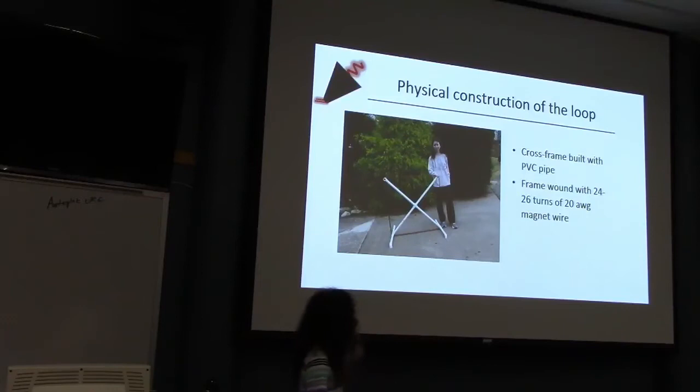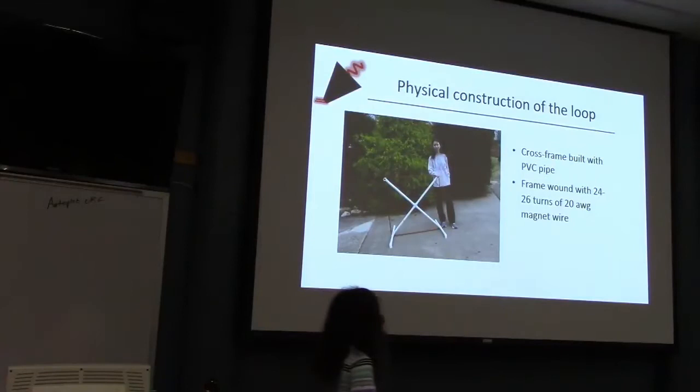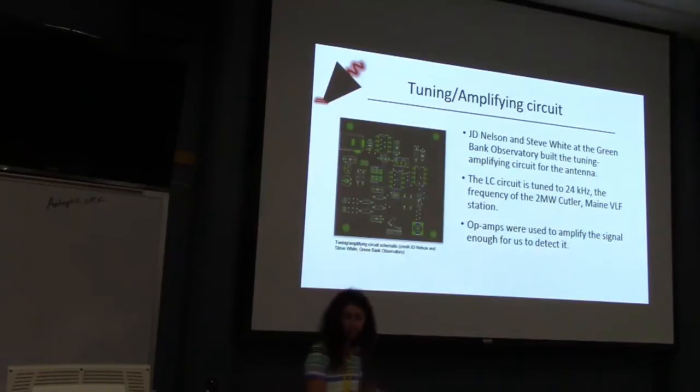GNU Radio performs digital signal processing steps and records our data, which we can then save and process later with secondary software that plots a bandpass plot as well as a time series plot, which is the one we use to look for solar flares. The physical construction of the loop antenna is really simple and cheap to build — it's just made out of PVC pipe and about 24 to 26 turns of 20 gauge wire.